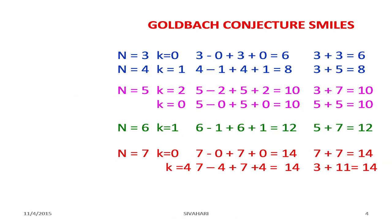If n equals 3, k equals 0 gives 3 plus 3 equals 6. If n equals 4 and k equals 1, we have 4 minus 1 and 4 plus 1, that is 3 plus 5 equals 8. So 3 and 5 are prime numbers, and their sum is the next even number.